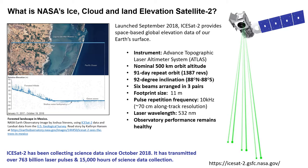ICESat-2 uses a green laser at 532 nanometers, consisting of six beams arranged in three pairs that provide us with observations such as the ones we see here, captured over a forested landscape in Mexico, where ICESat-2 measured elevation for a forested hillside, shallow water bathymetry, and ocean waves. ICESat-2 has been collecting science data since October 2018 and has transmitted over 763 billion laser pulses and 15,000 hours of science data collection.